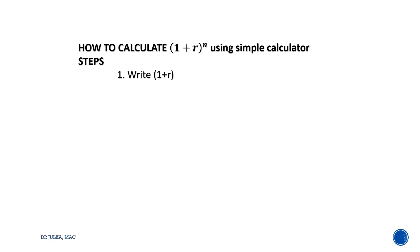Write 1 plus r in your calculator, then press multiply only once, and press equal n minus 1 times. For example, if you want to calculate 1.08 to the power of 5, n is 5 and n minus 1 is 4, so press equal 4 times.